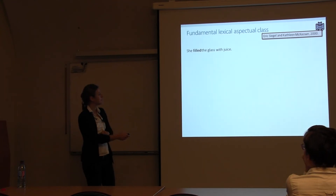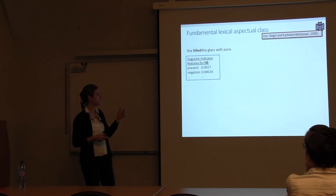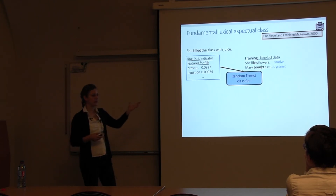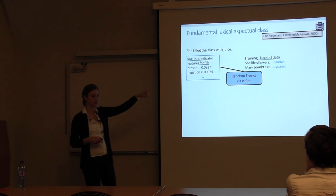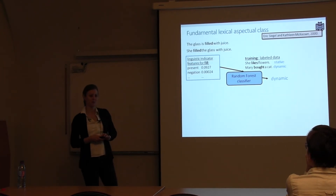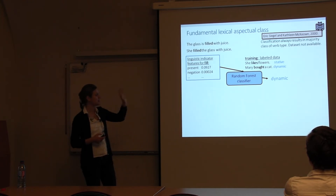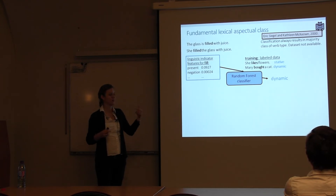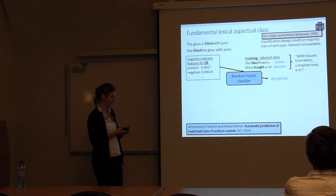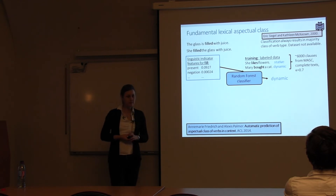The limitation is that these features are type-based: 'she filled the glass with juice' and 'the glass is filled with juice' get the same features and thus the same predicted label. So the classifier just predicts the majority class for each verb type. The original data was unavailable, so Alexis and I labeled 6,000 clauses from MASC achieving kappa of 0.70. We extended the work to study unseen verbs using a cross-validation setting where all instances of one verb are kept in one fold.